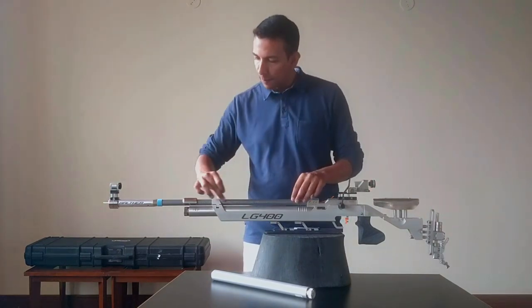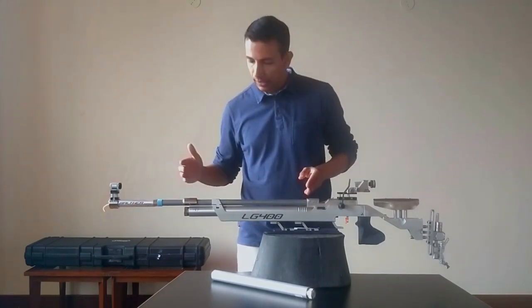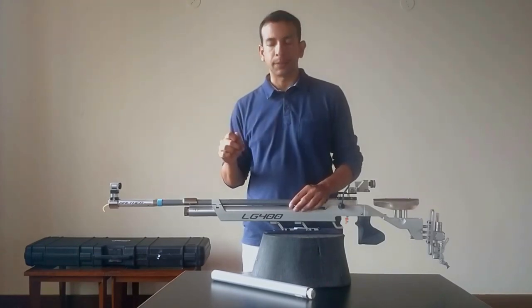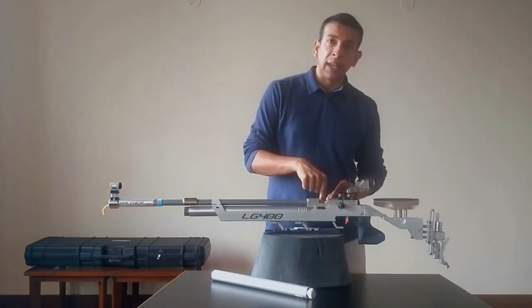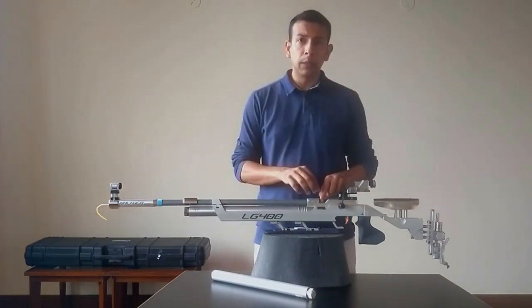From the sights, we will go to the barrel. This entire part of the rifle is called the barrel. This is the part in which your pellet travels. Now, we load the pellet in this chamber over here. This is called the breech.